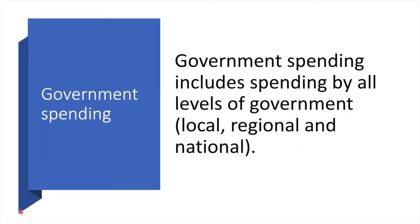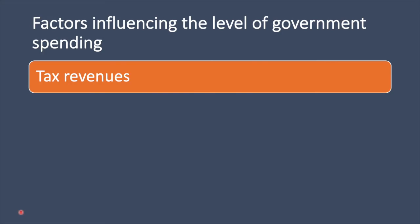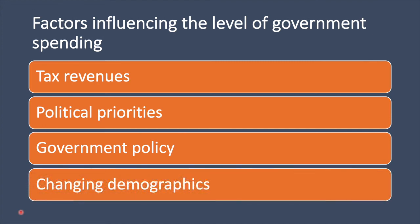The third component is government spending, which includes spending by all levels of government — local, regional and national. Government spending is influenced by tax revenues collected, political priorities, government policy, and changing demographics. Government spending can be higher with more tax revenues and constrained by lower revenues. If the country's priorities include expanding the military or improving schools, increased spending may result; however, if the government is more concerned about rising national debt, austerity measures may be taken. If a country experiences a high birth rate or has an ageing population, there will be necessary increases in spending — for schooling or for healthcare and pensions.